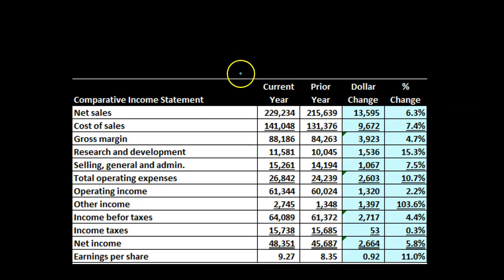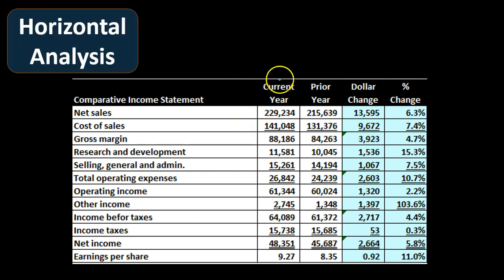Here's the same thing for the income statement — a horizontal analysis with current year, prior year, the change, and then the percentage change. Since the income statement is a performance document over a certain time period, we can go through these percentages and set a standard for a percentage threshold, then look into and analyze why there's such a large percentage change.